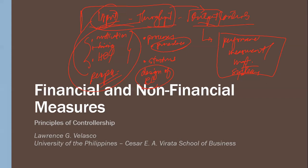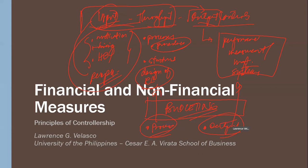We're now delving into output controls. The budget is in between throughput and output controls. The budgeting cycle — when we talk about budgeting, it talks about the process of how to budget, so that's part of throughput controls. But the output of the budget forms part of output controls, because performance is measured against the budget. The budgeting process output is an input to output controls, while how you do the budget is part of throughput controls. That's why budgeting encompasses both.